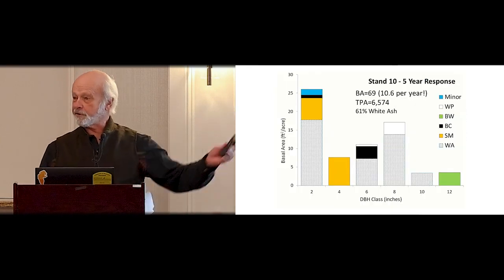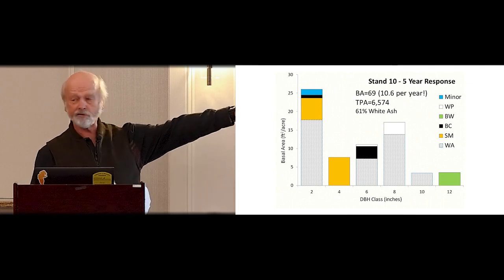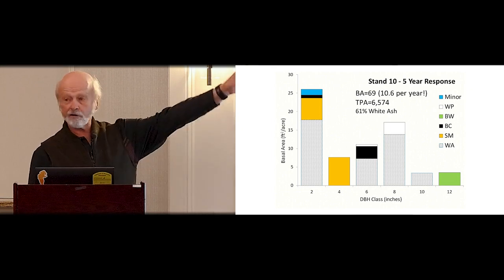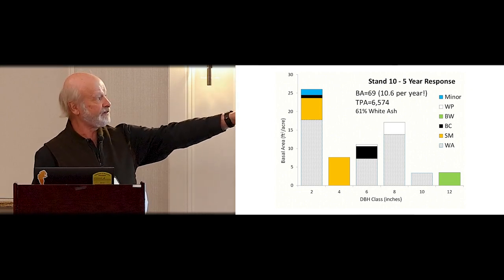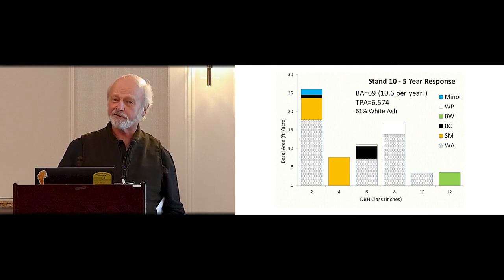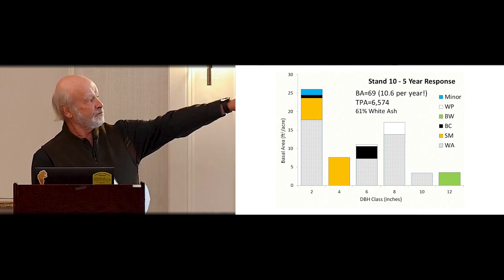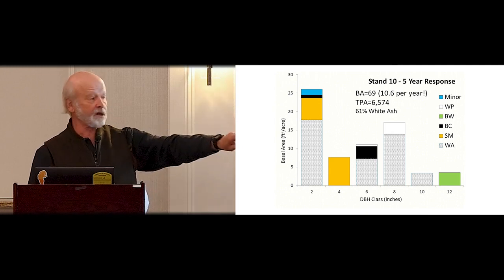We went back and re-measured the plot, and found all kinds of interesting ingrowth response — which you saw in the picture. We're now back up to 69 square feet from 14 in five years — that's 10 square feet per acre per year. That's a high rate of basal area growth for a hardwood stand in Maine. We went from 200 crop trees per acre to 6,000 trees — all that ingrowth plus on-growth.